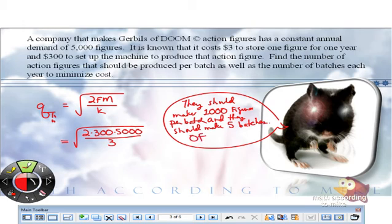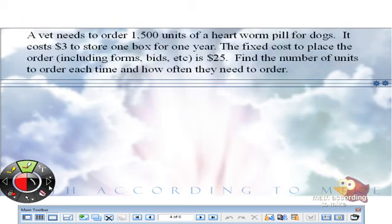Of doom. A vet needs to order 1,500 units of a heartworm pill for dogs. Three bucks to store one box per year. Fixed cost, including as it says there, ordering forms, bids, yada yada is 25 bucks. And find the number of units to order each time and how often to order.